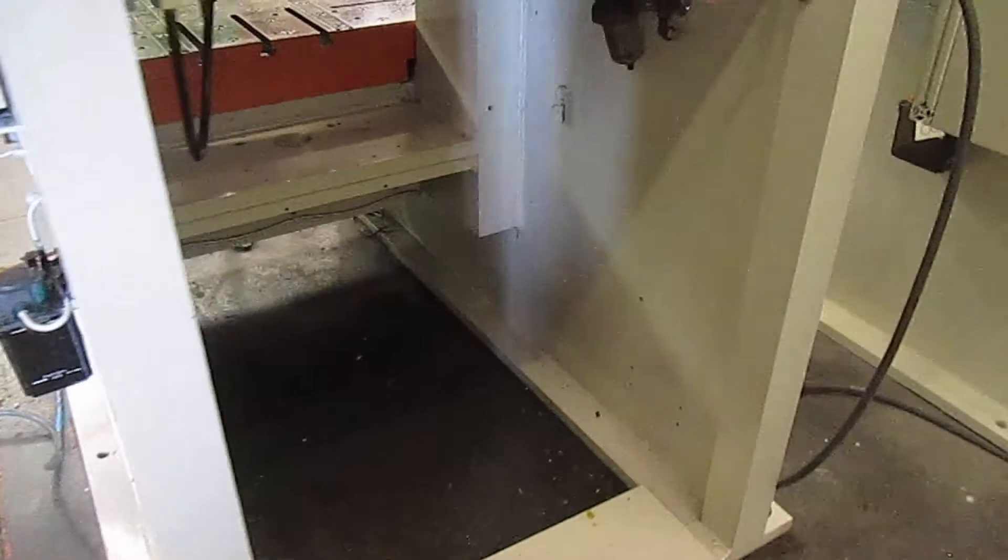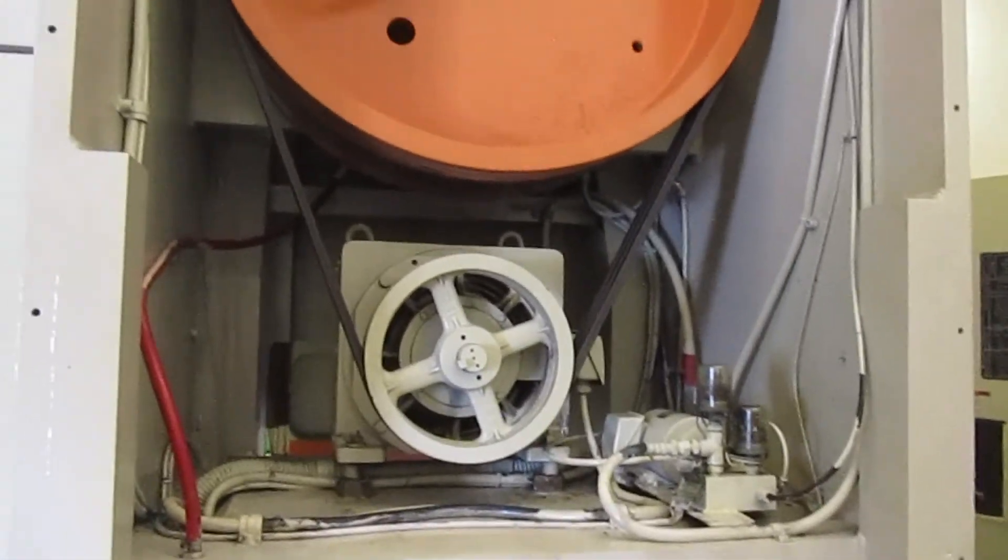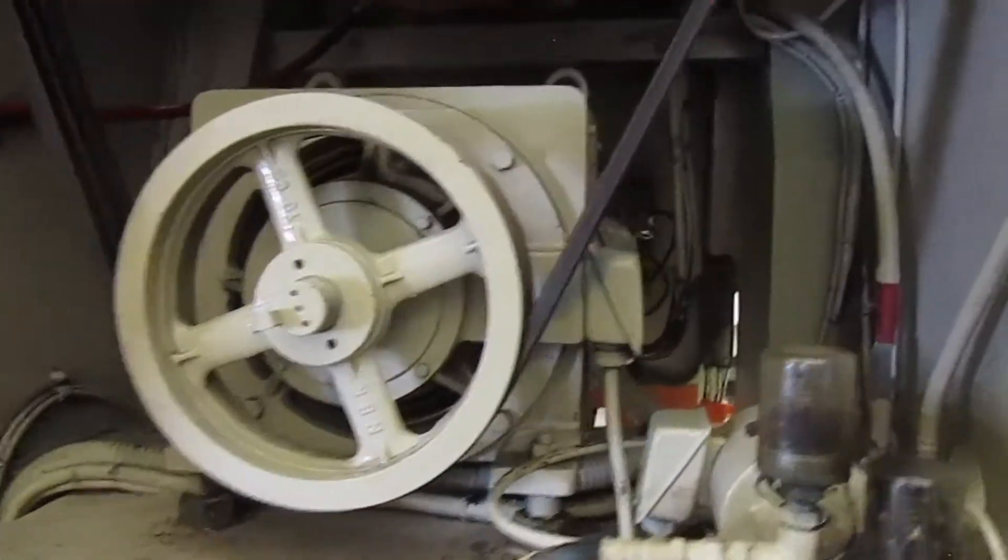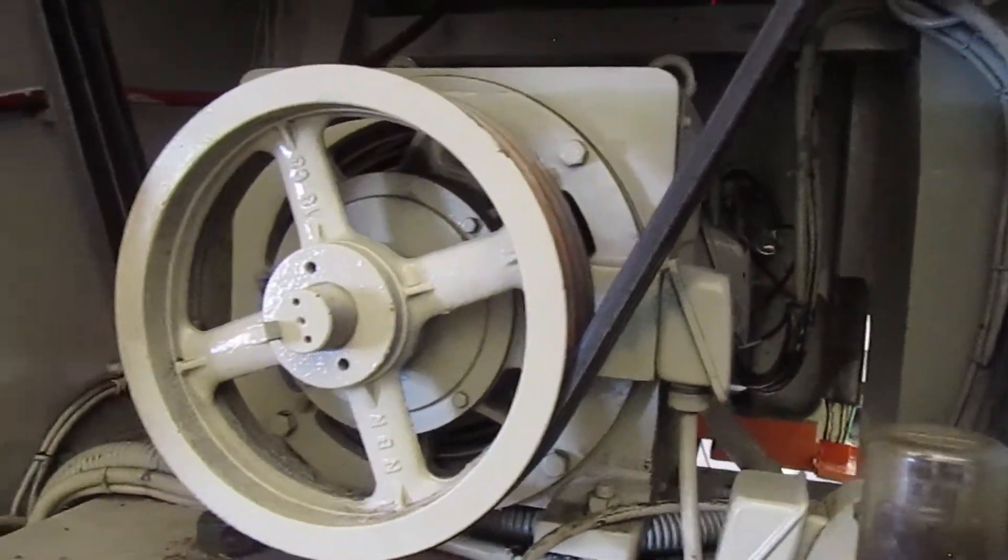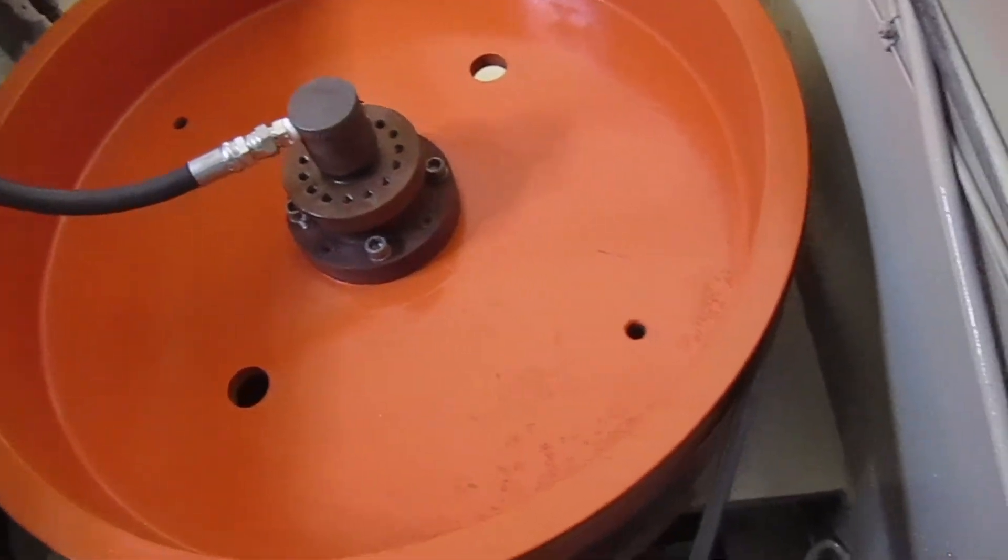This is the back side. We have taken the covers off the back for inspection. Eddy current motor. And obviously your flywheel and then the clutches behind it.